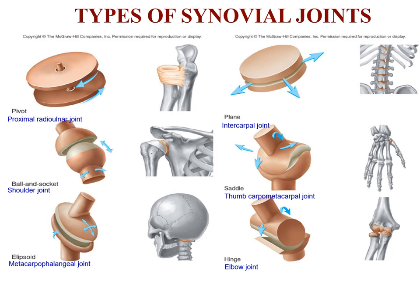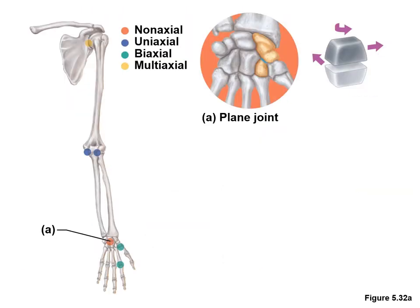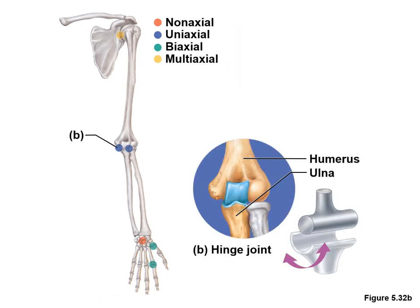Synovial joints are classified according to their structure and by the number of planes of motion in which the bones can move about an axis. The structural classes and their examples are illustrated in the accompanying slides.